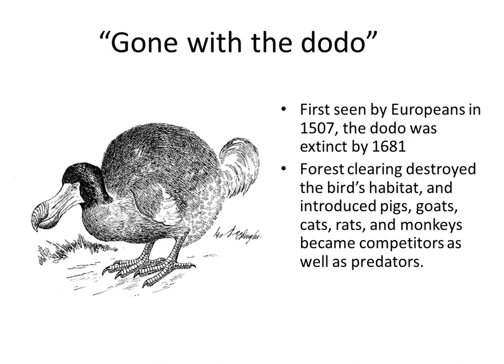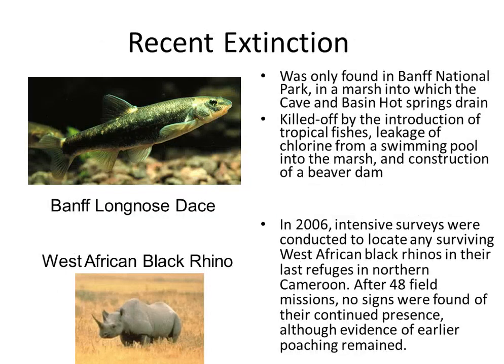The dodo bird was seen by Europeans in 1507 but was extinct by 1681. Forest clearing destroyed its habitat, and introduced pigs, goats, cats, rats, and monkeys became competitors and predators. The Banff Long-nosed Dace was found only in Banff National Park in a marsh into which the Cave and Basin hot springs drained, and was killed off by the introduction of tropical fishes, leakage of chlorine from a swimming pool into the marsh, and construction of a beaver dam.